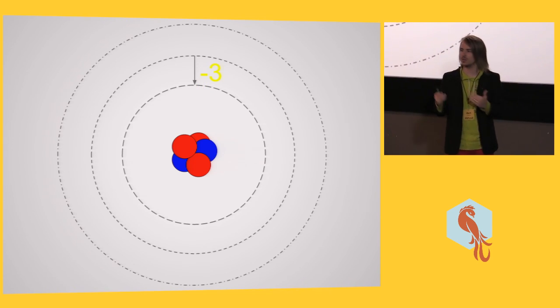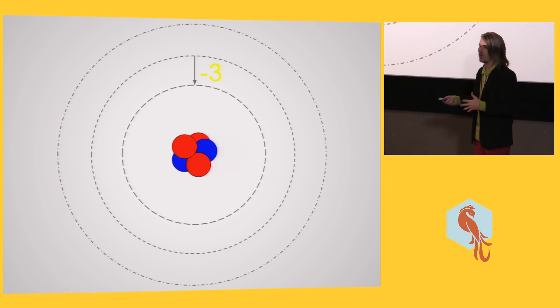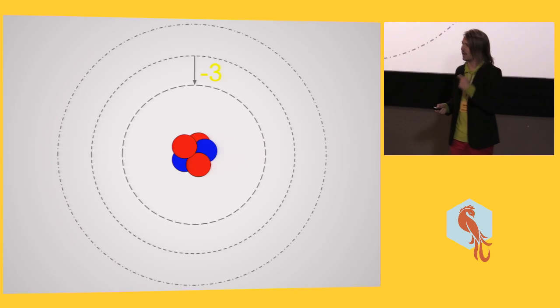So the difference between those two states is negative 3, from 5 to 2. You have a delta difference of negative 3. That is quantifiable.